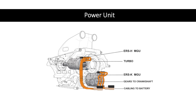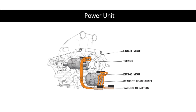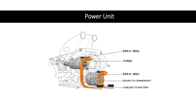A well-tuned suspension system helps the car keep stable through corners, while a powerful and efficient power unit provides the energy needed to move the car forward. By optimizing each of these components, a race car can achieve the perfect balance between speed, handling, and safety, which is essential for winning races.